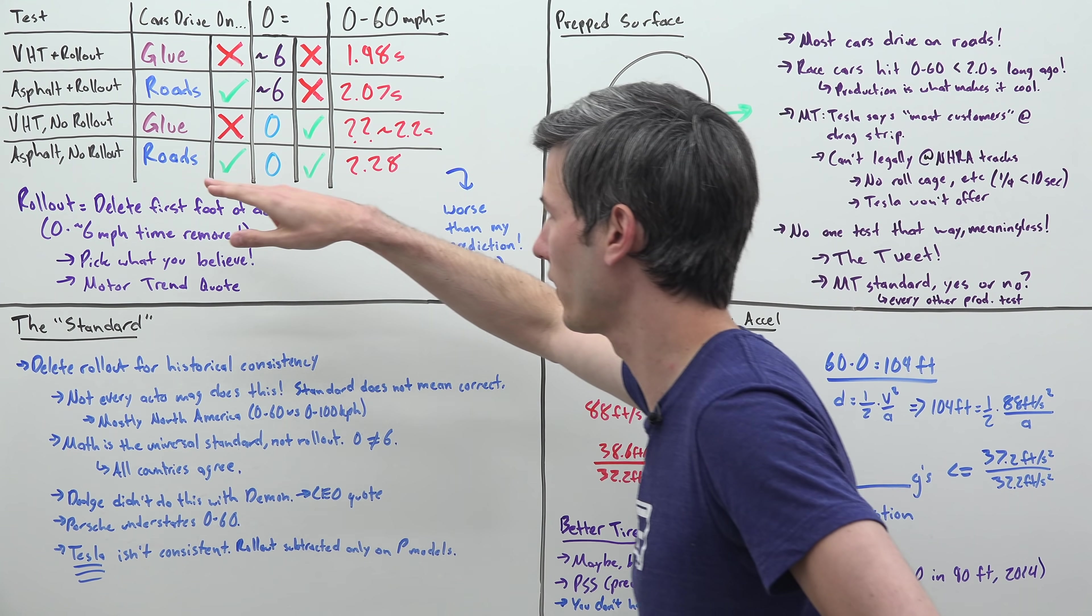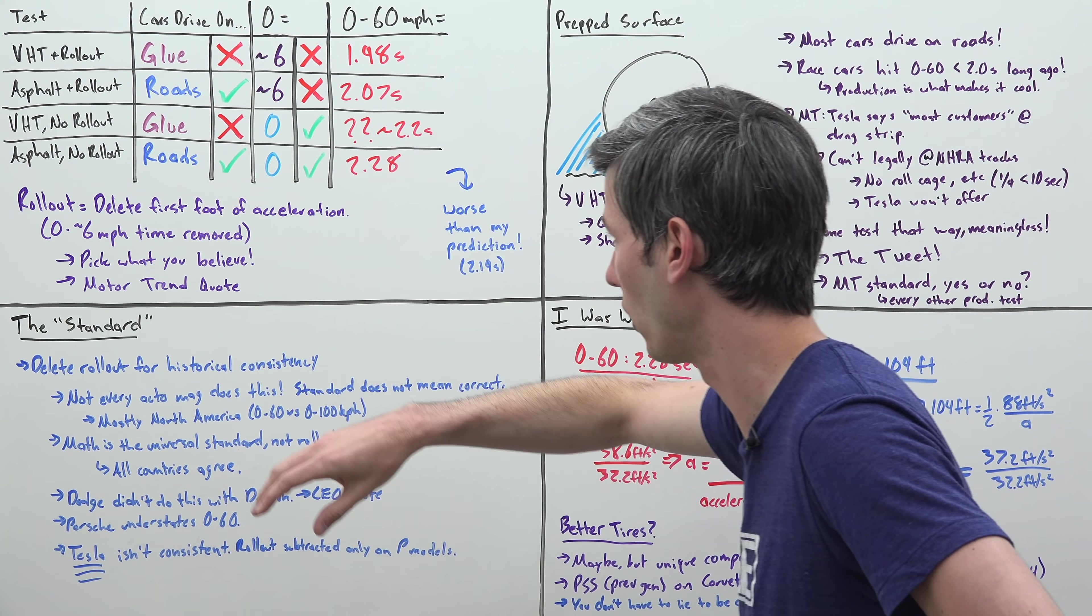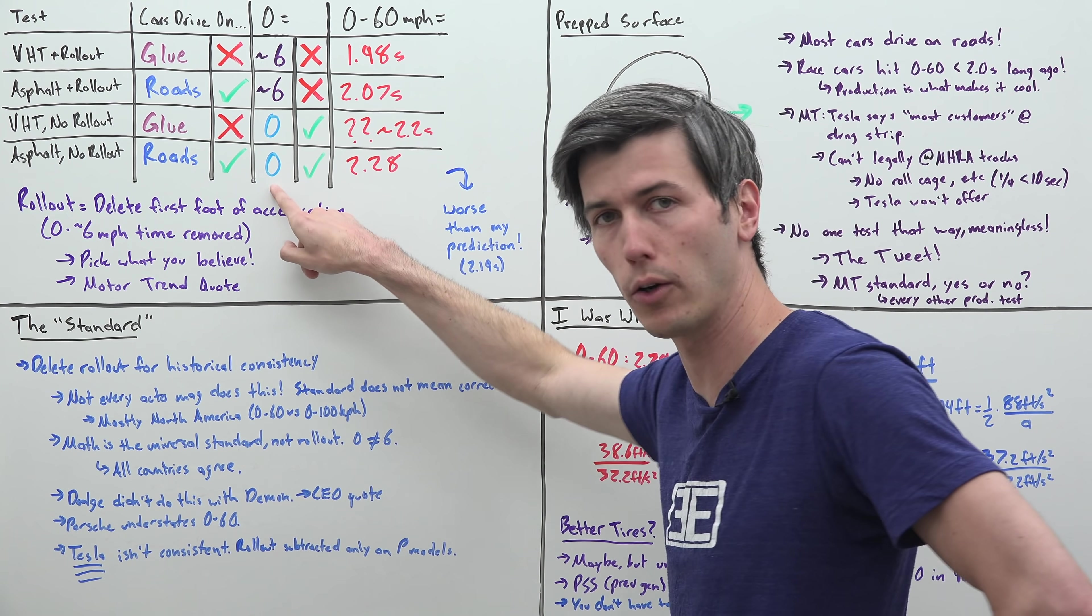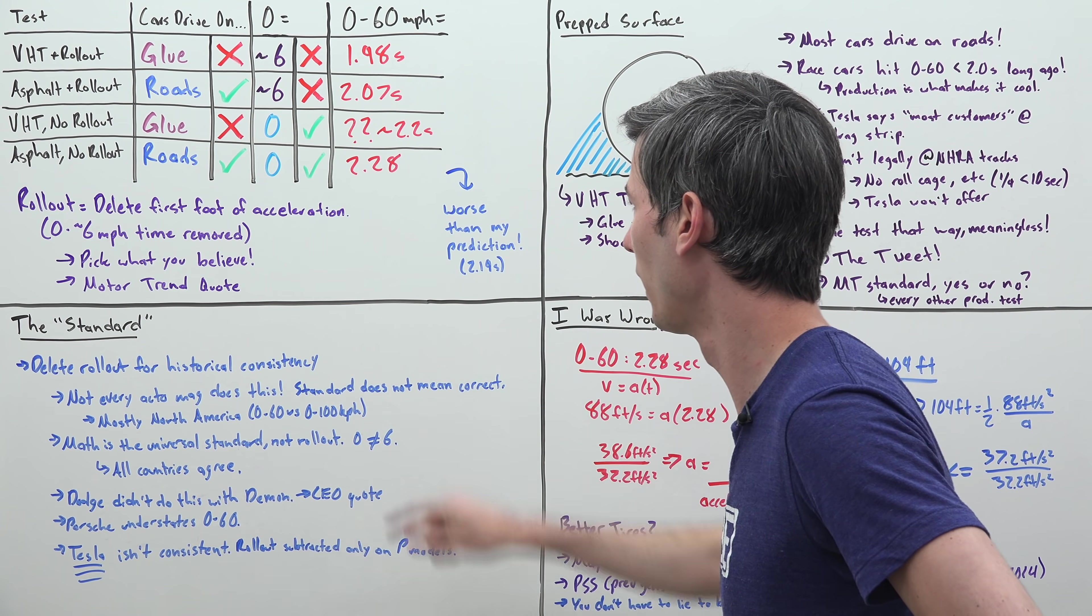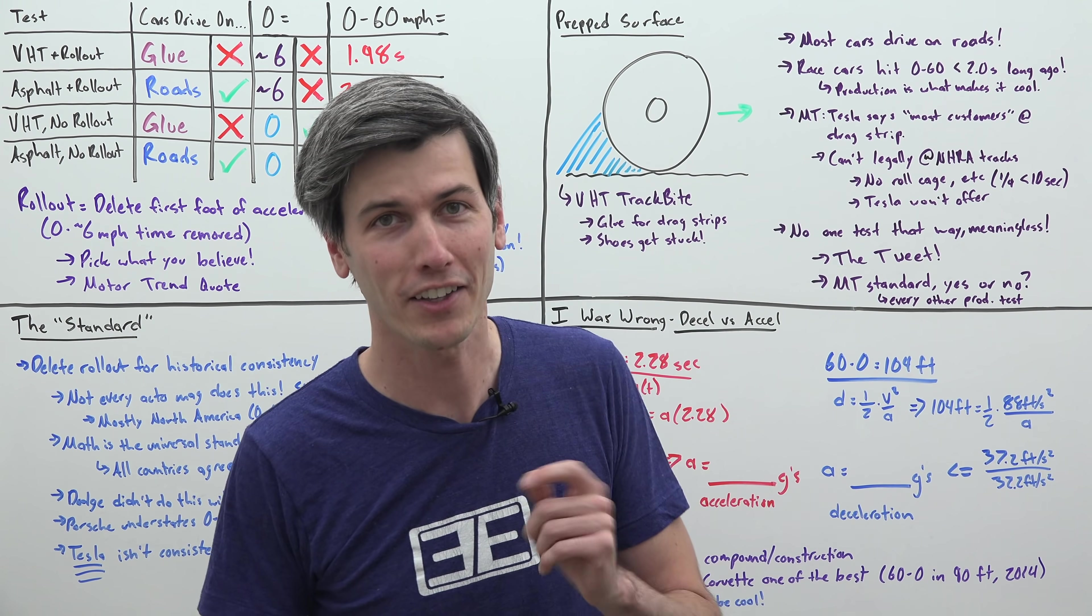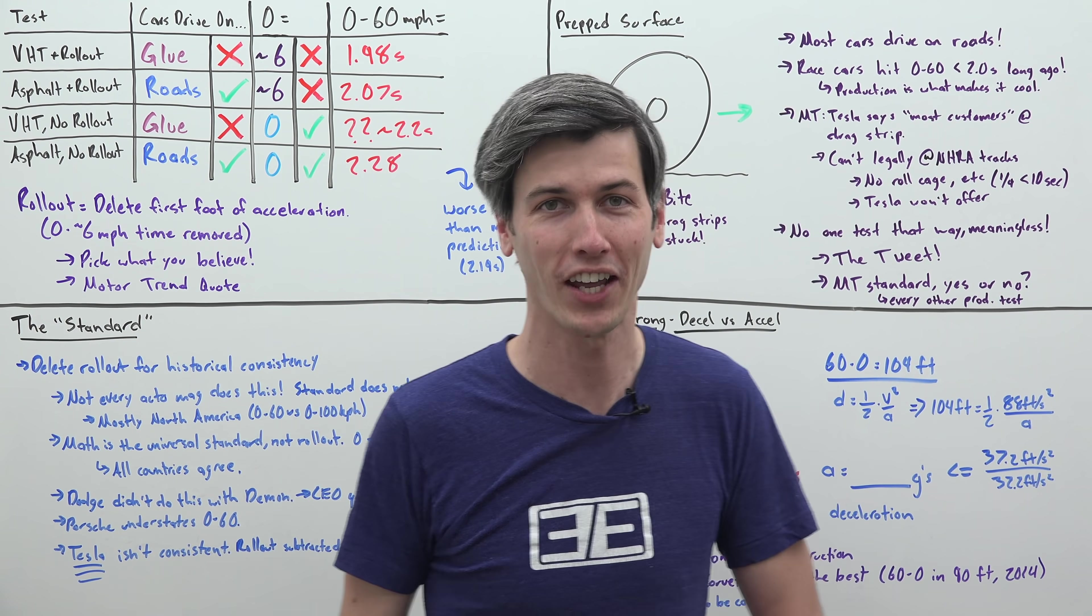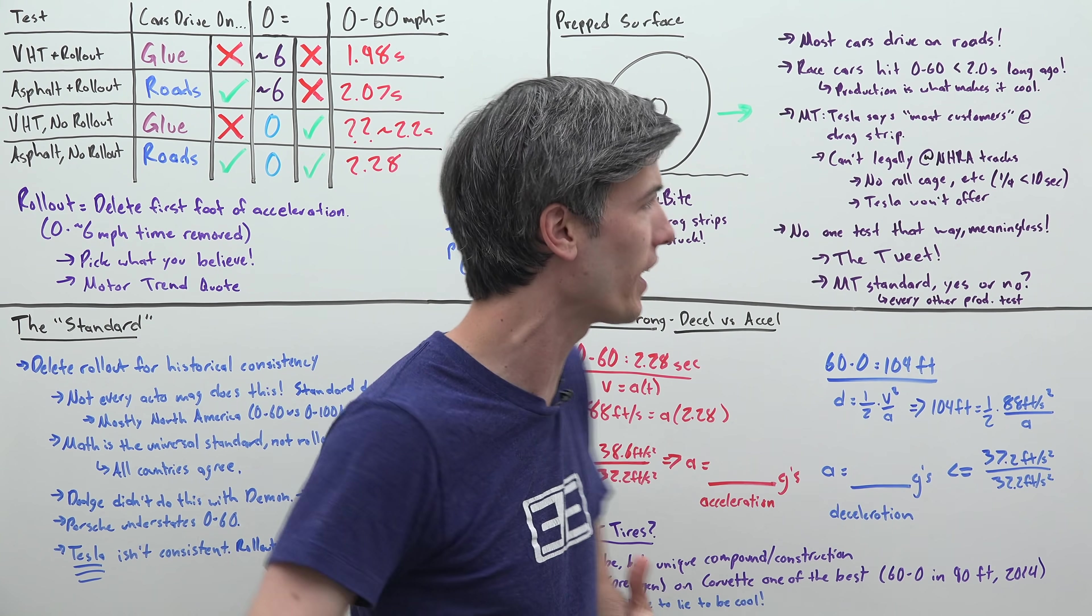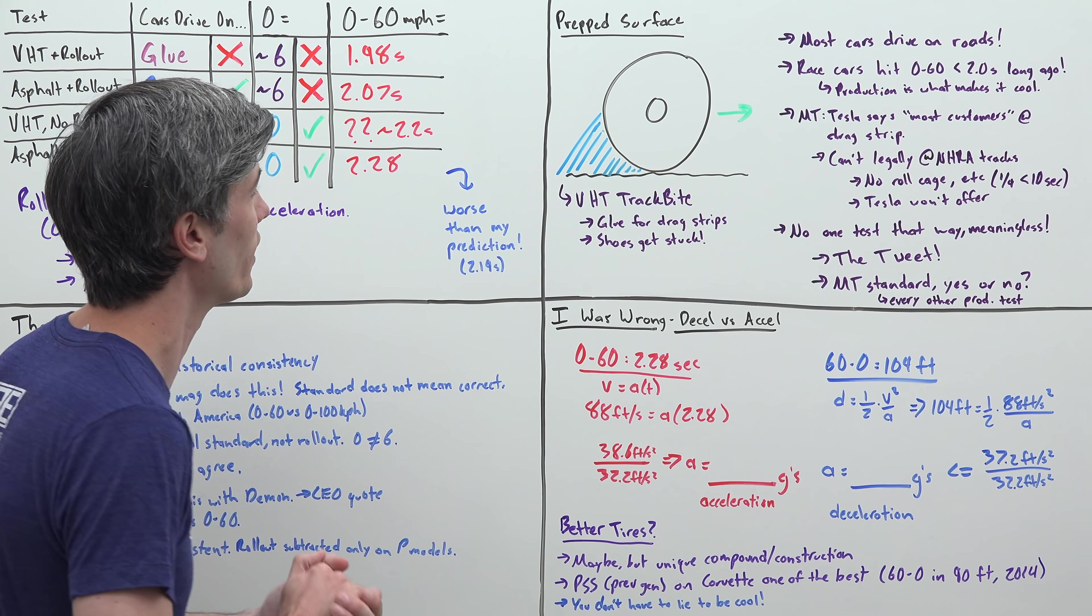Motor Trend took the car, tested it on typical asphalt, and started the timer at 0 miles per hour instead of 6 miles per hour. They got a 0 to 60 acceleration of 2.28 seconds, which by the way is the fastest production car they have ever tested from 0 to 60, so it's super exciting. It just wasn't done in under two seconds.